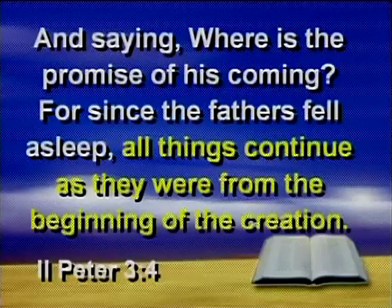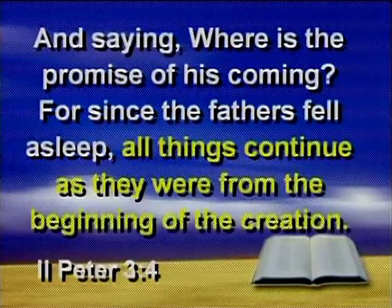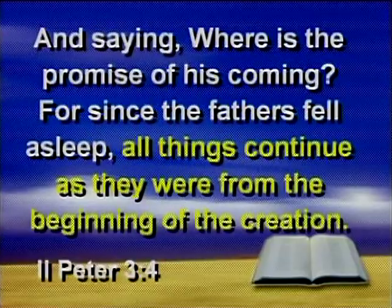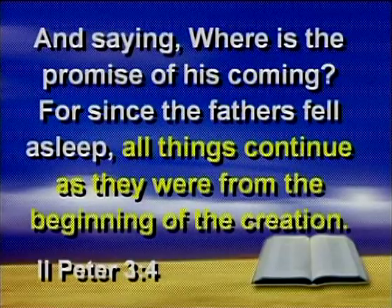The scoffers are going to say, 'Where is the promise of His coming? For since the fathers fell asleep, all things continue as they were from the beginning of the creation.' This is called the uniformitarian doctrine — the way things are happening now is the way they've always been happening: long, slow, gradual processes. We cover more on that on videotape number 4.